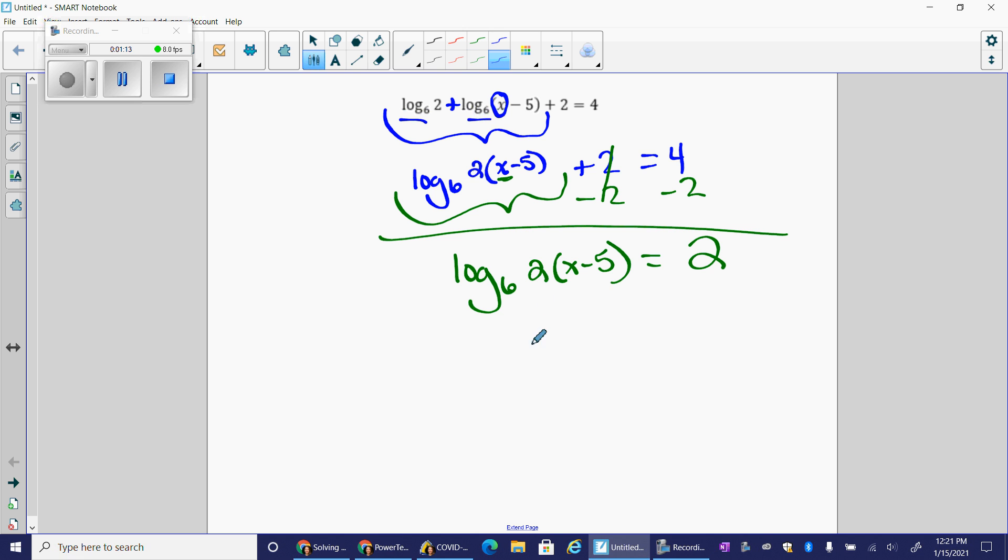Now I am ready to convert using inverse operations. The inverse of a log base six is an exponent of base six. So this is saying six squared. Remember, logarithms are always set equal to the power will equal the argument inside that logarithm. So six squared will equal two times x minus five. This should be an exponential expression we can solve.